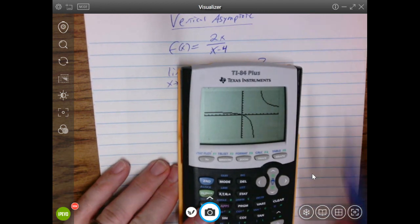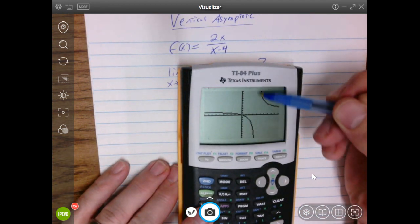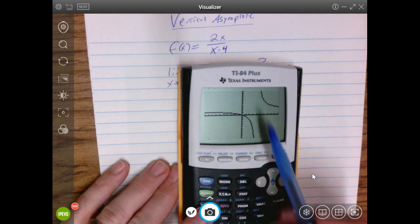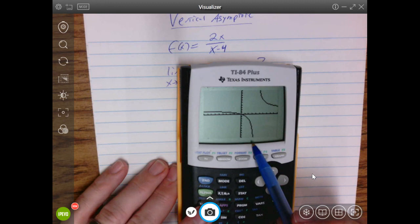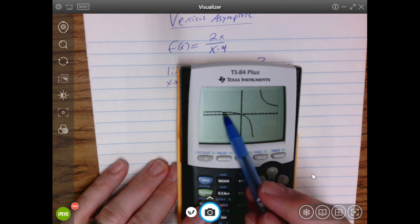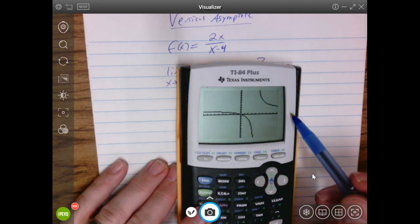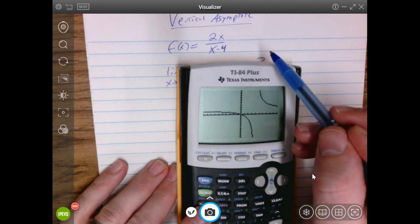So as you look here, x equals 4 is this vertical line, and the graph is approaching it, right? Approaching negative infinity as x approaches 4 from the left. As x approaches 4 from the left, you're down here. As x approaches 4 from the right, you're going up to positive infinity.